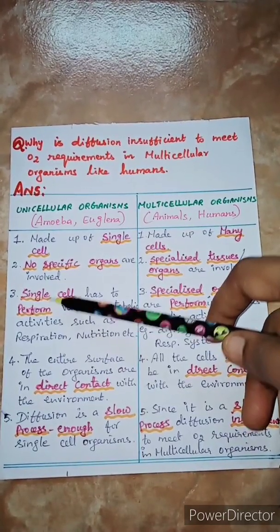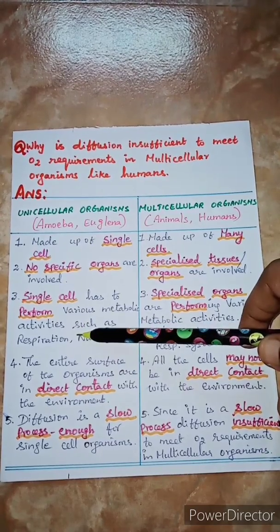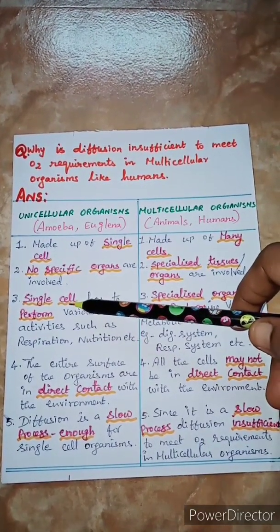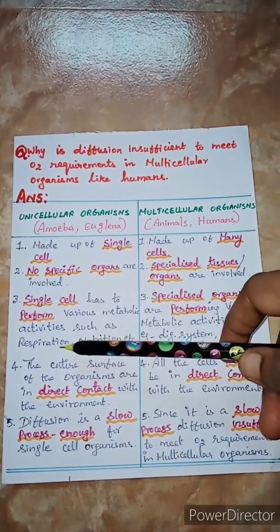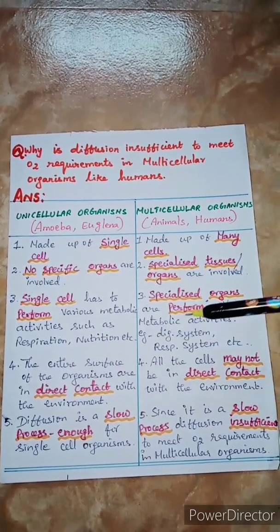Third point, the single cell has to perform various metabolic activities because there is no specialized tissue, because it is made up of a single cell. So the single cell has to perform various metabolic activities such as respiration, nutrition, excretion, transportation, etc.